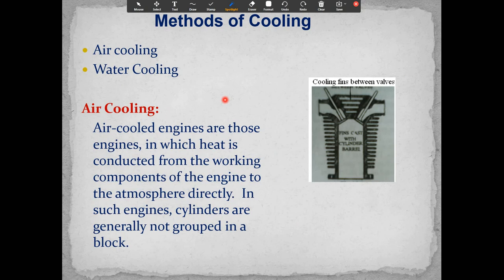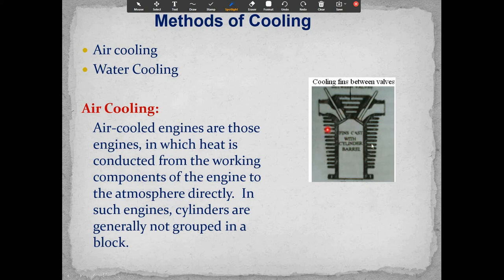There are two methods of cooling: air cooling and water cooling. In air cooling, as seen in motorcycles, heat is conducted from the working components of the engine directly to the atmosphere. In such engines, cylinders are generally not grouped in a block. You can see fins surrounding the cylinder — the inlet wall and exhaust wall — which expose maximum cylinder area to air for cooling.